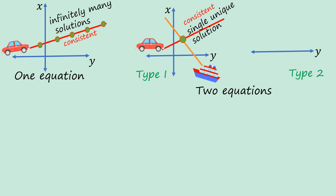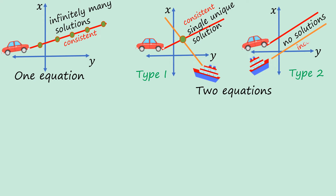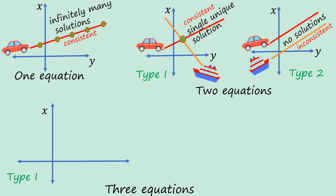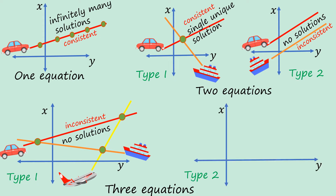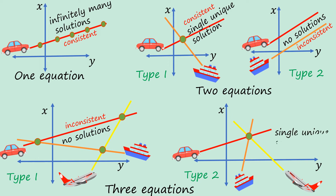For type two with two equations: using the same car and shape, if the two do not meet they are parallel, meaning there is no solution and the system is inconsistent. Now for three equations: type one uses three entities — a car, a shape, and a plane. The shape and the car meet at one point but they do not all meet at a single point, so there is no solution and the system is inconsistent. For type two with three equations, all three meet at one point, giving a single unique solution, and the system is consistent.